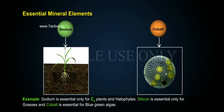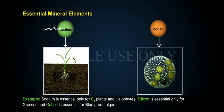For example, Sodium is essential only for C4 plants and halophytes. Silicon is essential only for grasses. And Cobalt is essential for blue-green algae.